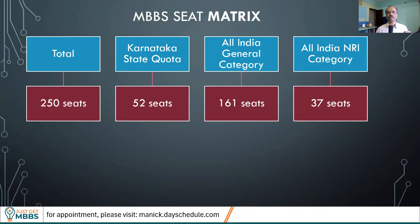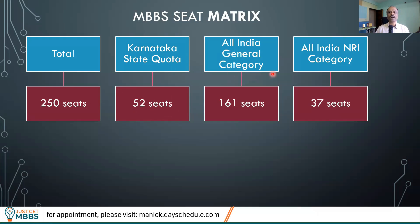The first information I want to share is the seat matrix. This medical college has 250 seats. Unlike KMC Manipal, which does not have a Karnataka state quota, KMC Mangalore shares 52 seats to Karnataka via KEA, the Karnataka Examinations Authority. Under All India general category, there are 161 seats (may vary slightly), and the All India NRI category has 37 seats, totalling 250 seats.